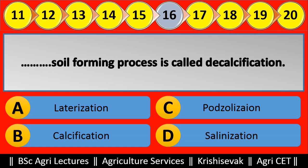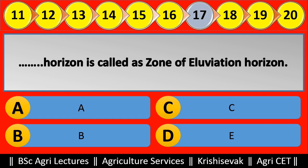Question 17: Blank horizon is called the zone of eluviation. Options are: (a) A, (b) B, (c) C, (d) E. Right answer is E horizon — E horizon is called the zone of eluviation.